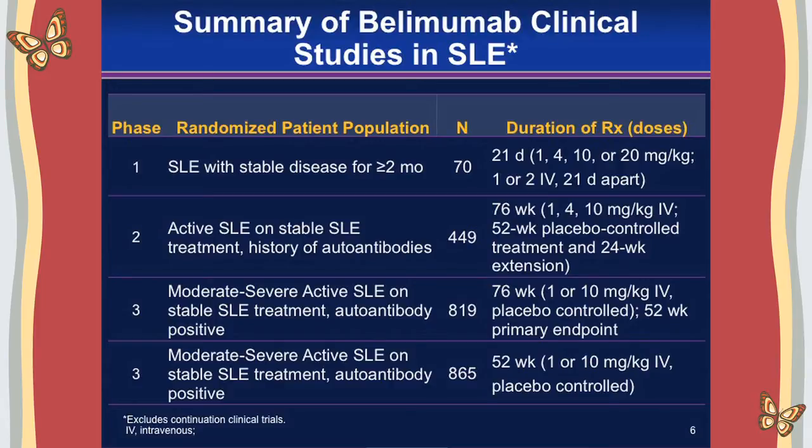The clinical development program for Belimumab has been quite extensive. BLyS was discovered in 1999; our first phase one trial in 70 patients began in 2001. The phase two dose-ranging study — at that point the largest randomized clinical control trial in lupus — started in October 2003. Lessons from that study were applied to the design of our phase three studies, two large trials of over 800 patients each, which are the largest completed randomized control trials to date in lupus.